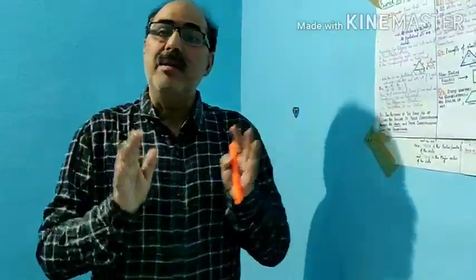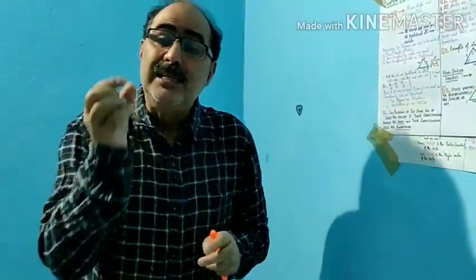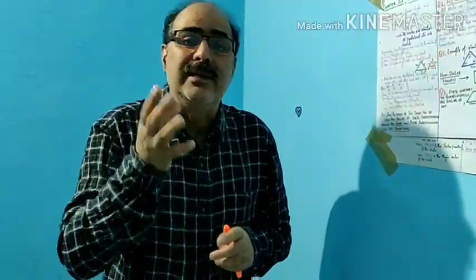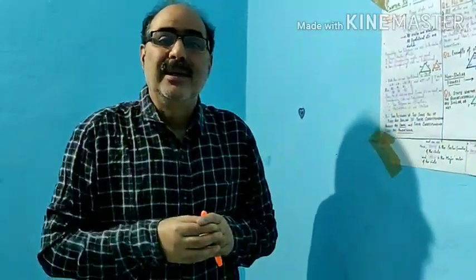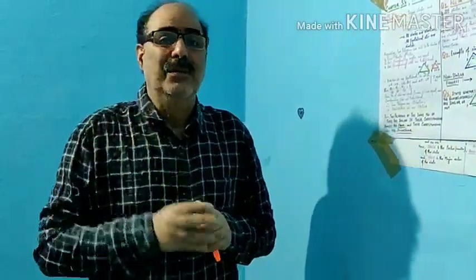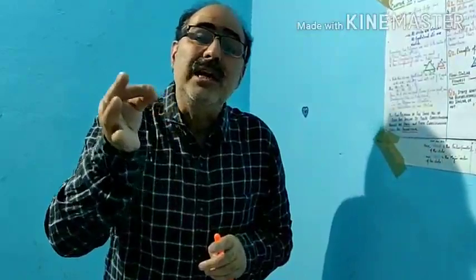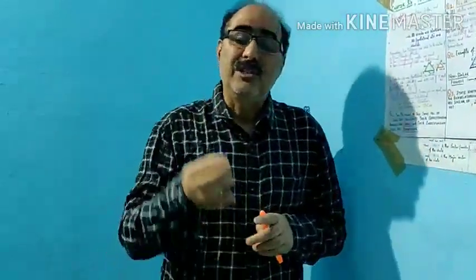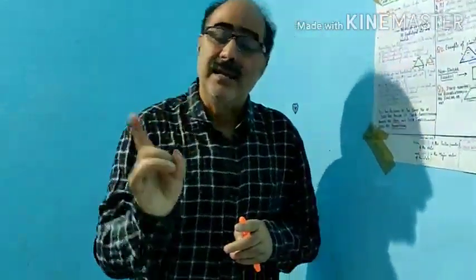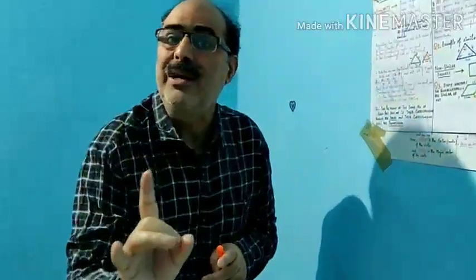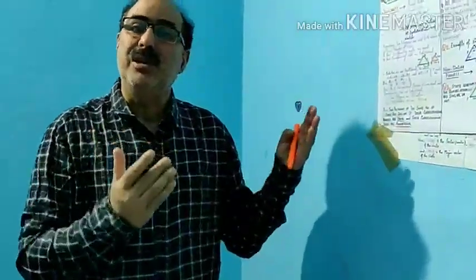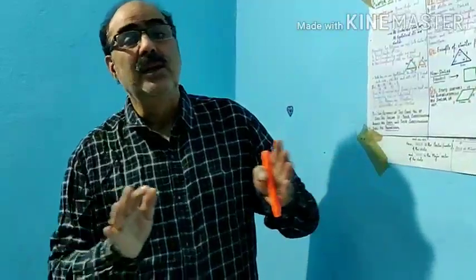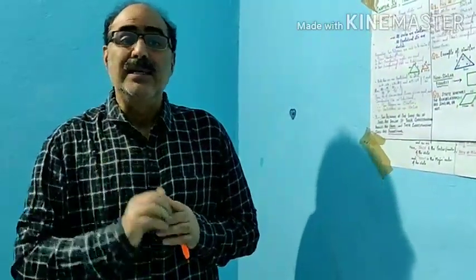एक खास बात यहां highlight करना चाहूंगा: triangles which are congruent are always similar. वो triangles जो congruent होती हैं, they are always similar. But triangles which are similar need not to be congruent. वो triangles जो similar होती हैं, वो congruent हो भी सकती हैं, नहीं भी हो सकती हैं।